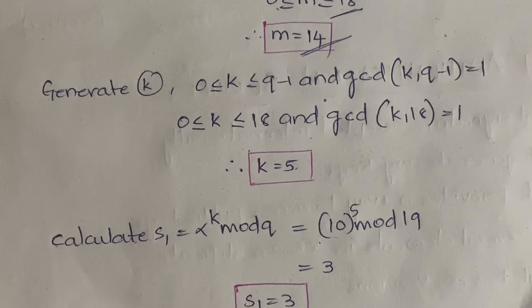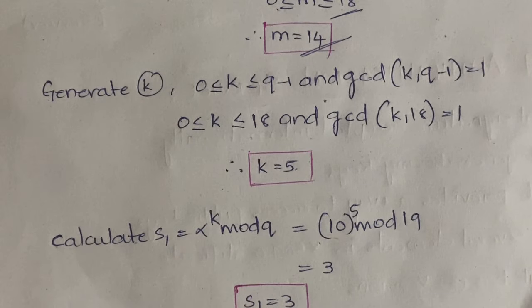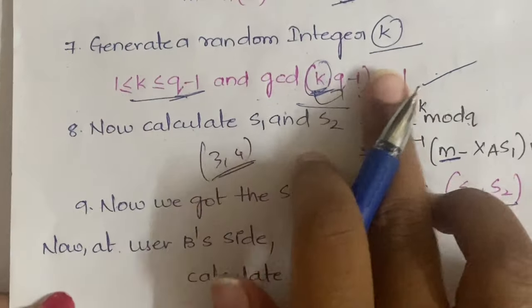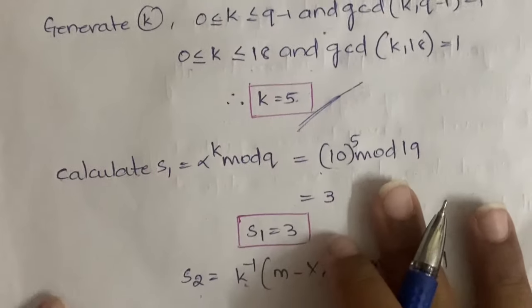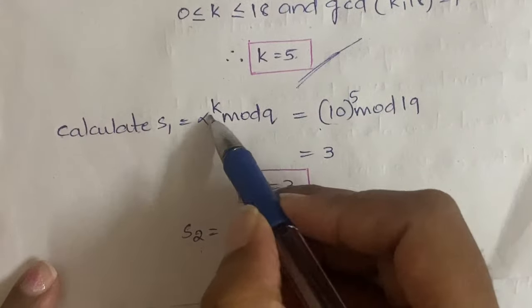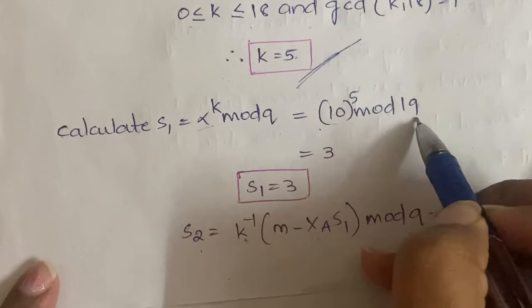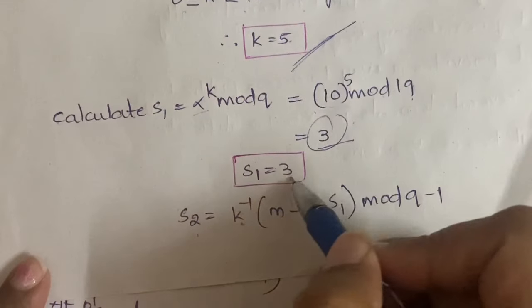We verify: 5 lies between 0 and 18, and gcd(5, 18) = 1, since 5 and 18 share no common divisor other than 1. So k = 5 is accepted. Now calculate s1: s1 = alpha^k mod q = 10^5 mod 19 = 3.